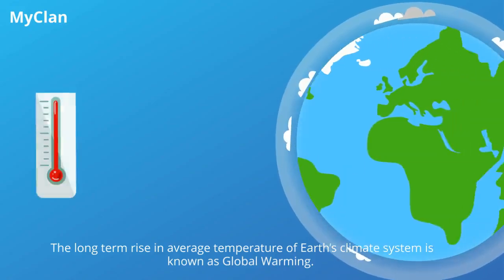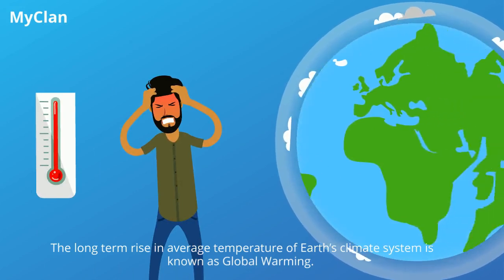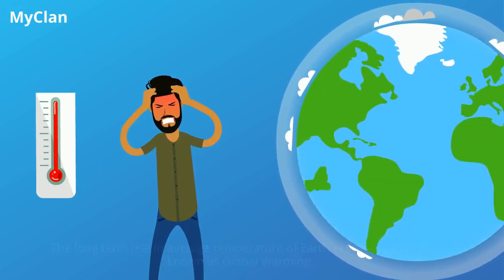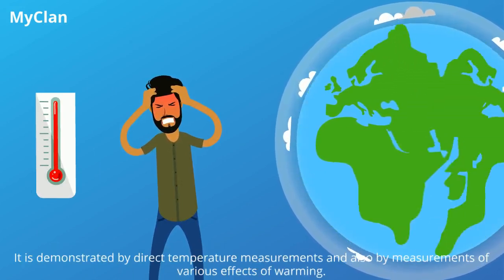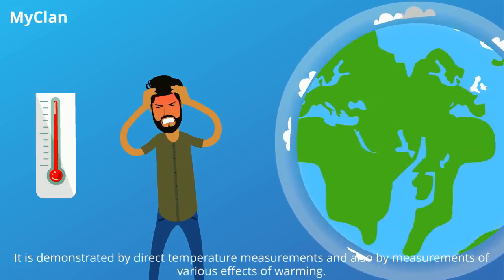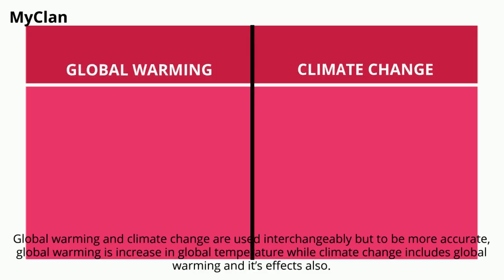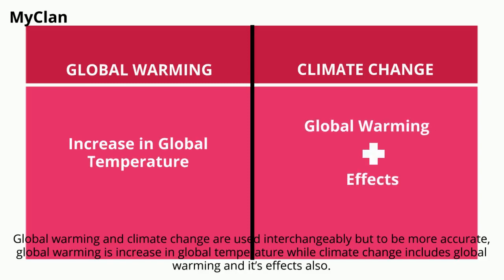The long-term rise in average temperature of Earth's climate system is known as global warming. It is demonstrated by direct temperature measurements and also by measurements of various effects of warming. Global warming and climate change are used interchangeably, but to be more accurate, global warming is an increase in global temperature while climate change includes global warming and its effects.